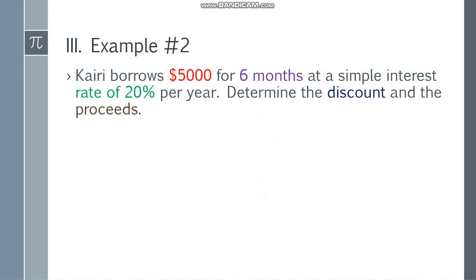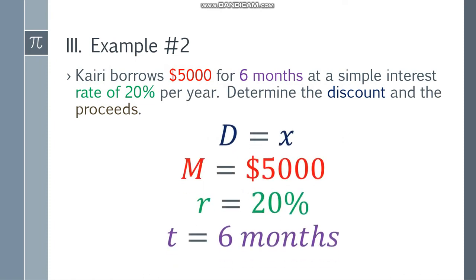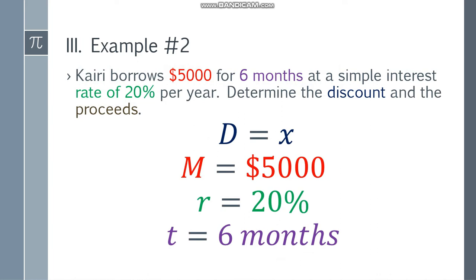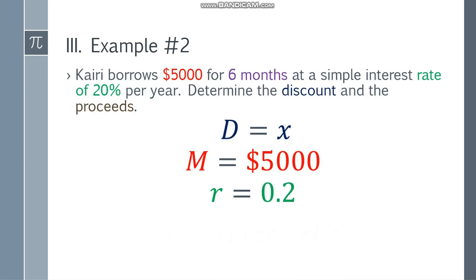Let's move on to example number 2. Kyrie borrows $5,000 for 6 months at a simple interest rate of 20% per year. Determine the discount and the proceeds. From the given, discount is X, maturity value is $5,000, R equals 20%, and T is 6 months. Change the rate from 20% to decimal form, that's 0.2. The time is in months so it needs to become years. There are 12 months in a year, so in fraction form that's 6 over 12, or one half.